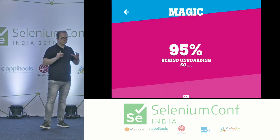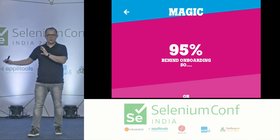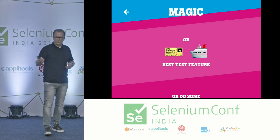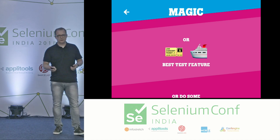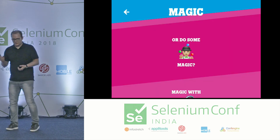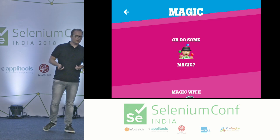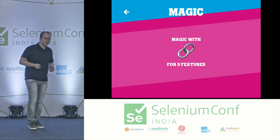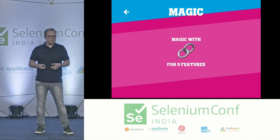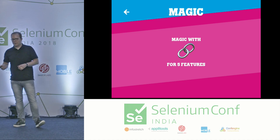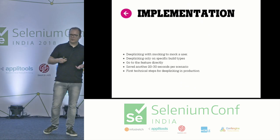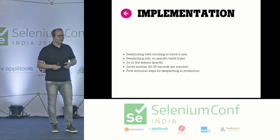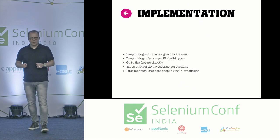95% of the functionality of the app is behind the onboarding flow. So for both manual and automated testing, the onboarding would be the most-run feature, or we needed to do some magic. We did magic with deep linking — not backdoors, because we also needed to automate iOS. Deep linking works like this: maybe you've received an email with a link like 'go to your invoices.' If you click it, it automatically opens your app, sometimes requiring login because you're in a restricted area.